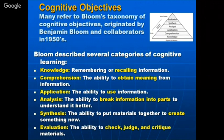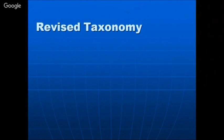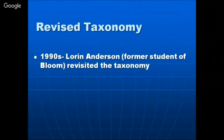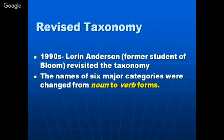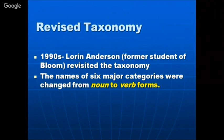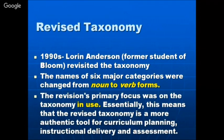There is also a revised taxonomy. In the 1990s, Lauren Anderson — one of Bloom's students — revised Bloom's taxonomy. The names of the six major categories were changed from noun to verb form, and slightly rearranged. Bloom gave them in noun form; Anderson gave the same classification using verbs — action-oriented form. The revision's primary focus was on making the taxonomy more practical in use.